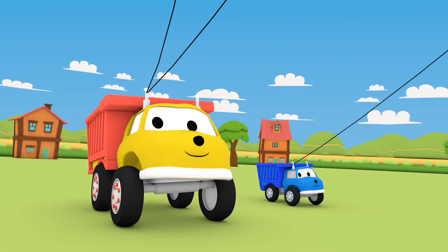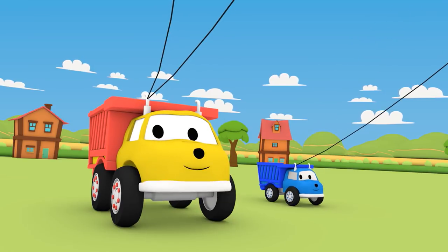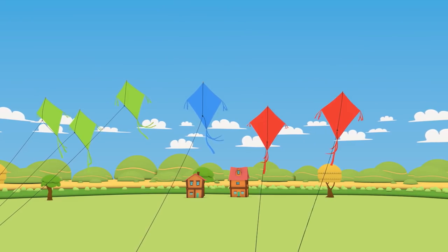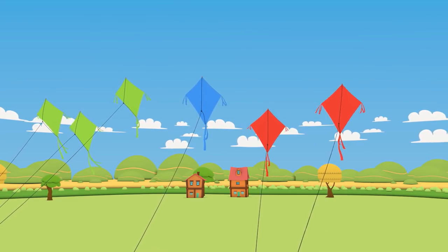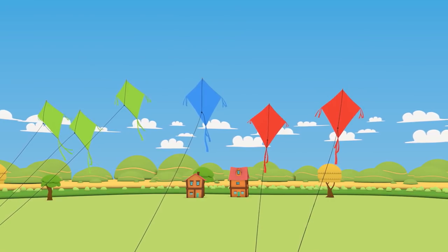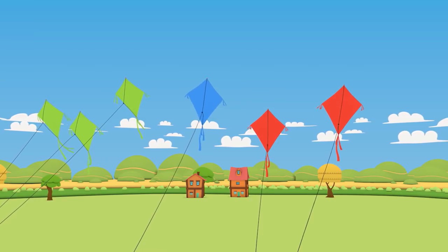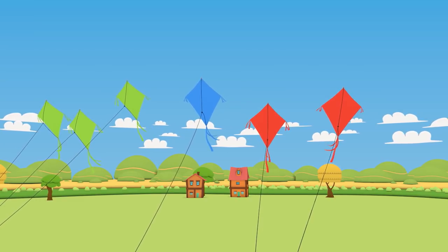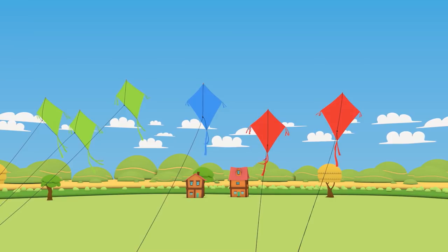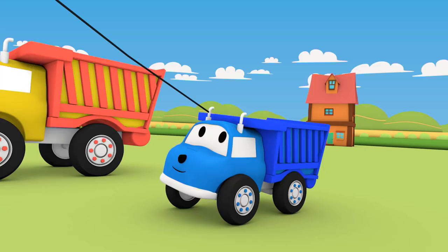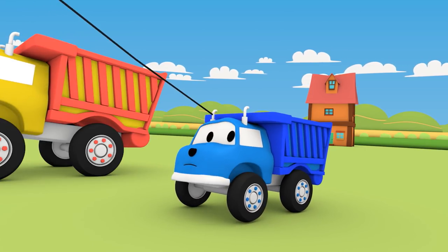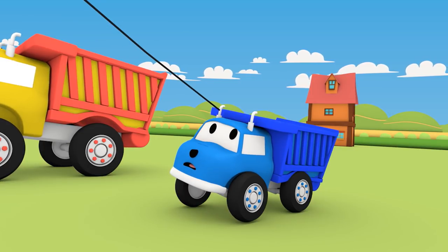Maybe we should count them again to be sure that we haven't lost any. How many red ones are there? One, two. Now let's count the blue ones. One, two. Wait a minute! Little Ethan only had one blue kite. Those other ones are green. Who can they belong to?